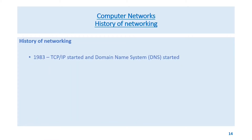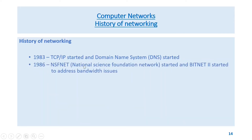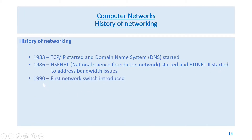In 1981, Internet Protocol IPv4 was defined. In 1983, TCP/IP started and the Domain Name System (DNS) was also started. In 1986, NSFNet (National Science Foundation Network) started and BITNET 2 started to address bandwidth issues.